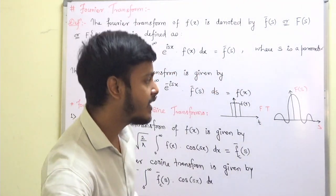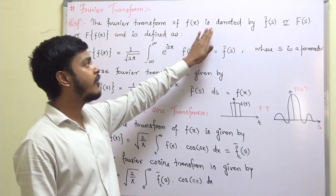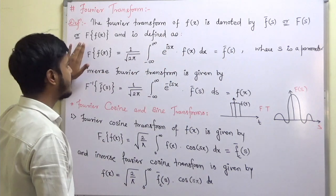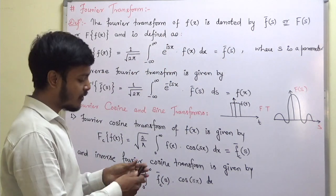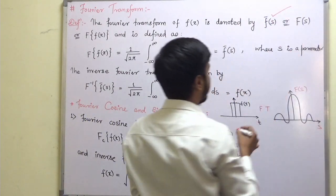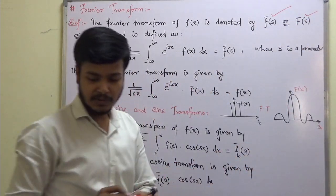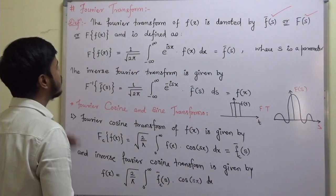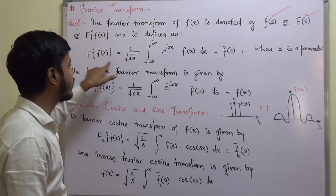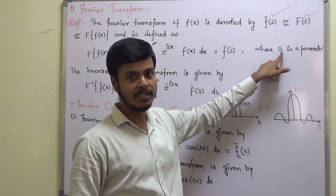Let us now take the formal definition of the Fourier transform. The Fourier transform of f(x) is denoted by various notations — the commonly used ones are f(s) or similar forms. The Fourier transform of f(x) is defined by an integral expression, where s is a parameter.